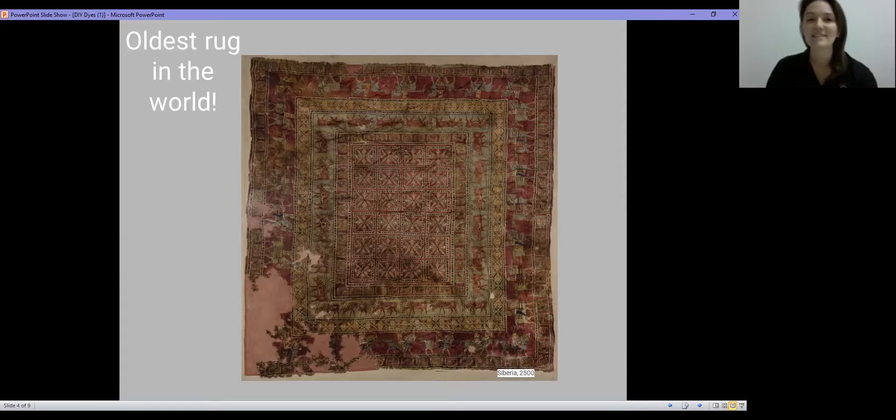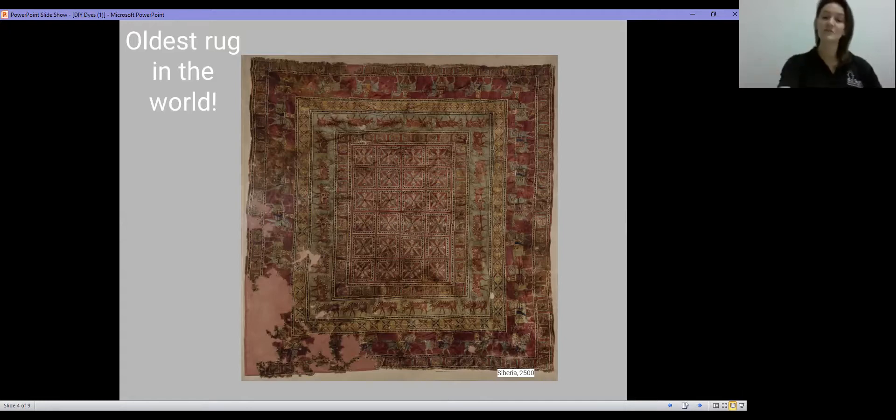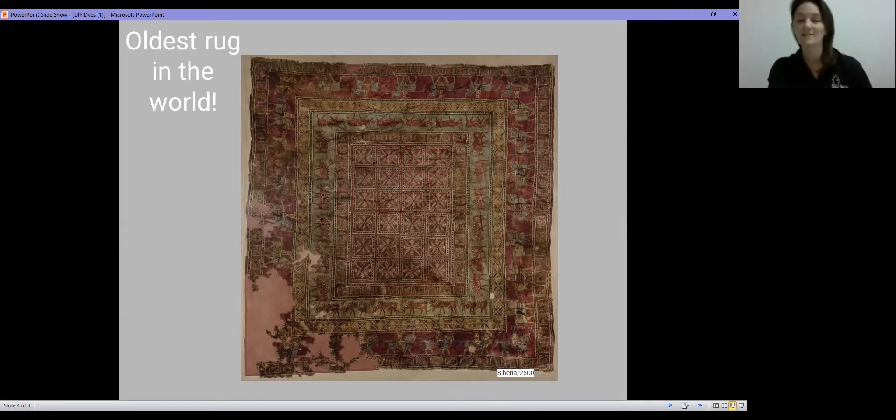And here you can see the oldest rug in the world. It was made in 2500 in Siberia. And it still has all these bright colors that we can see because it chemically bonded together, didn't wash off. So today we are going to be looking at making some of these beautiful dyes using things that you would have around your kitchen.